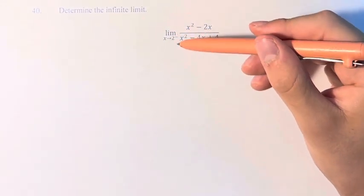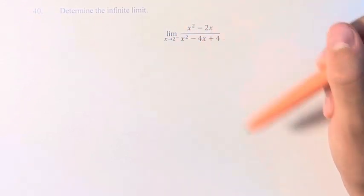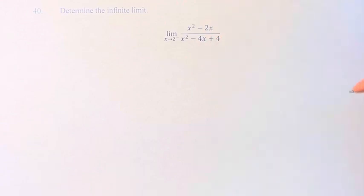Hello, and welcome back to another video. In this problem, we're asked to determine the infinite limit of x as it approaches 2 from the left of x squared minus 2x over x squared minus 4x plus 4.